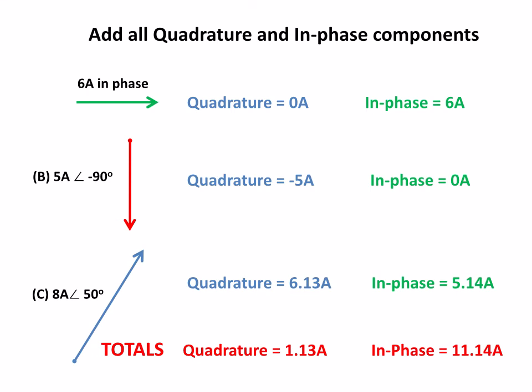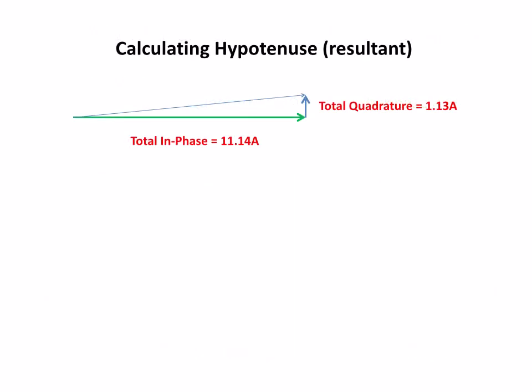And what that does, it forms a new triangle. So we've got the quadrature of 1.13 up and the in-phase 11.14 across. And that gives us this triangle here.